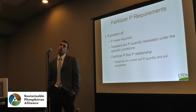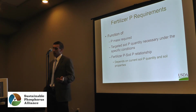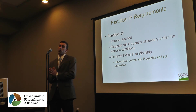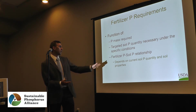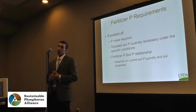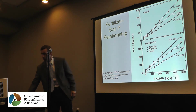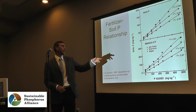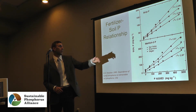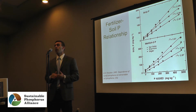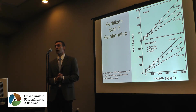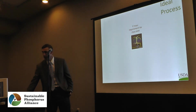Once we figure out how much soil phosphorus we need, how much fertilizer do we need to add? That depends on your target soil phosphorus level, which is a function of the moving target external soluble concentration. And to meet that target, how much fertilizer to add depends on the fertilizer-soil phosphorus relationship — which itself is a function of soil properties. For example, adding 300 pounds per acre of phosphorus to two soils with the same Mehlich-3 value but different soil properties will end up with different values. That needs to be taken into account as well.